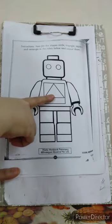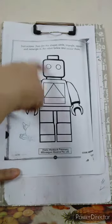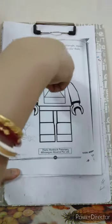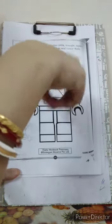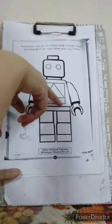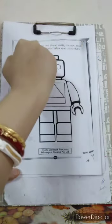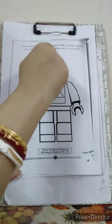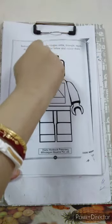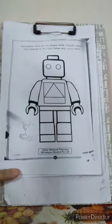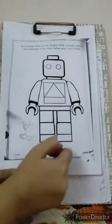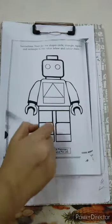So children, what we will do in this? Hunt for the shapes. We will hunt for the shapes. We will find out which shapes - circle, triangle, square and rectangle in the robot and below. In the robot below and color them. We will color them also. So let us find. Yes, let us hunt.